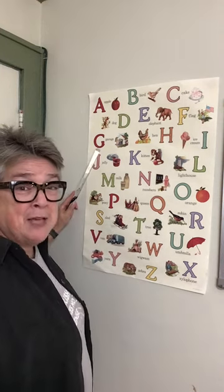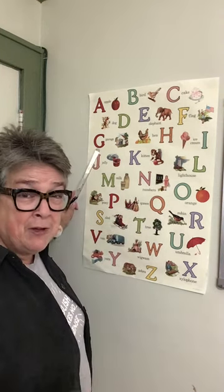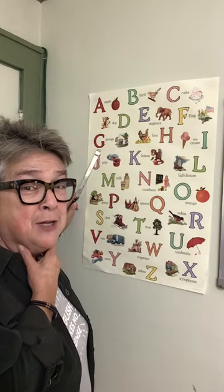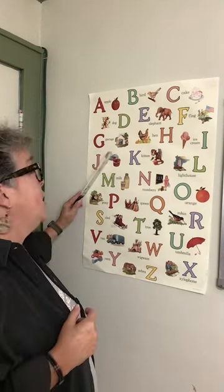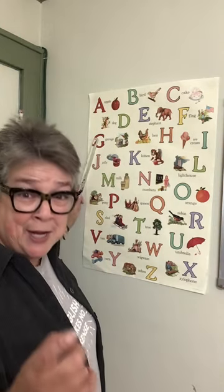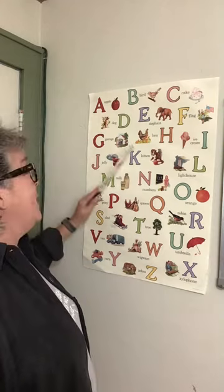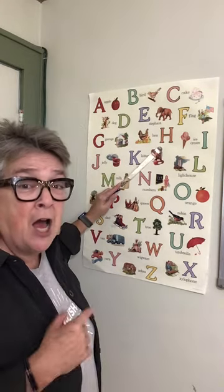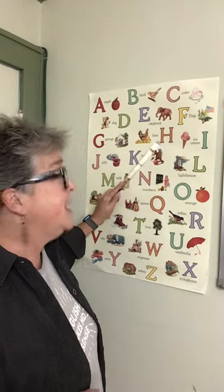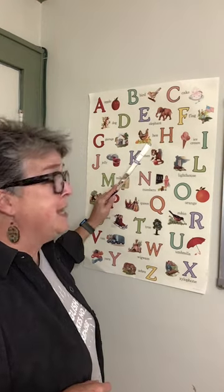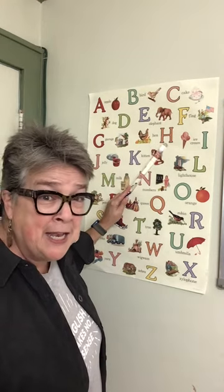G comes after F. G makes the G sound. You can feel the G right here — G as in garage, or got, or get, or go. H makes the H sound, like a hen. H.